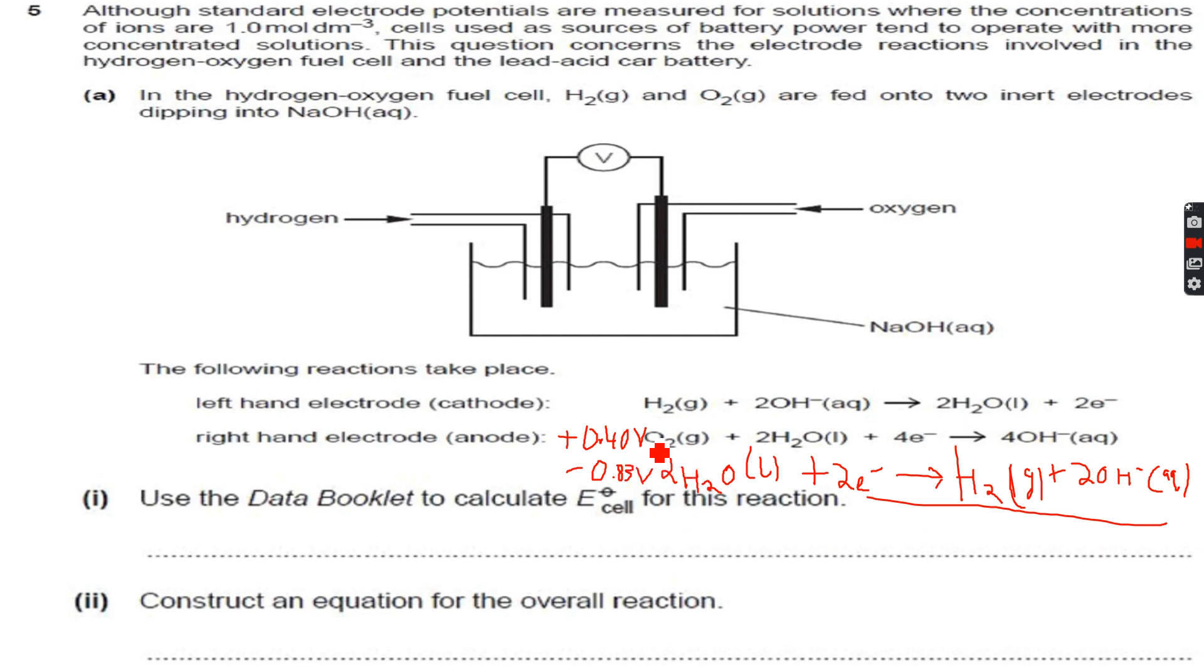When I invert it, I get the equation they've already given to me. So this equation, now what I have to do is just add these two together and I get 1.23 volts as E cell.